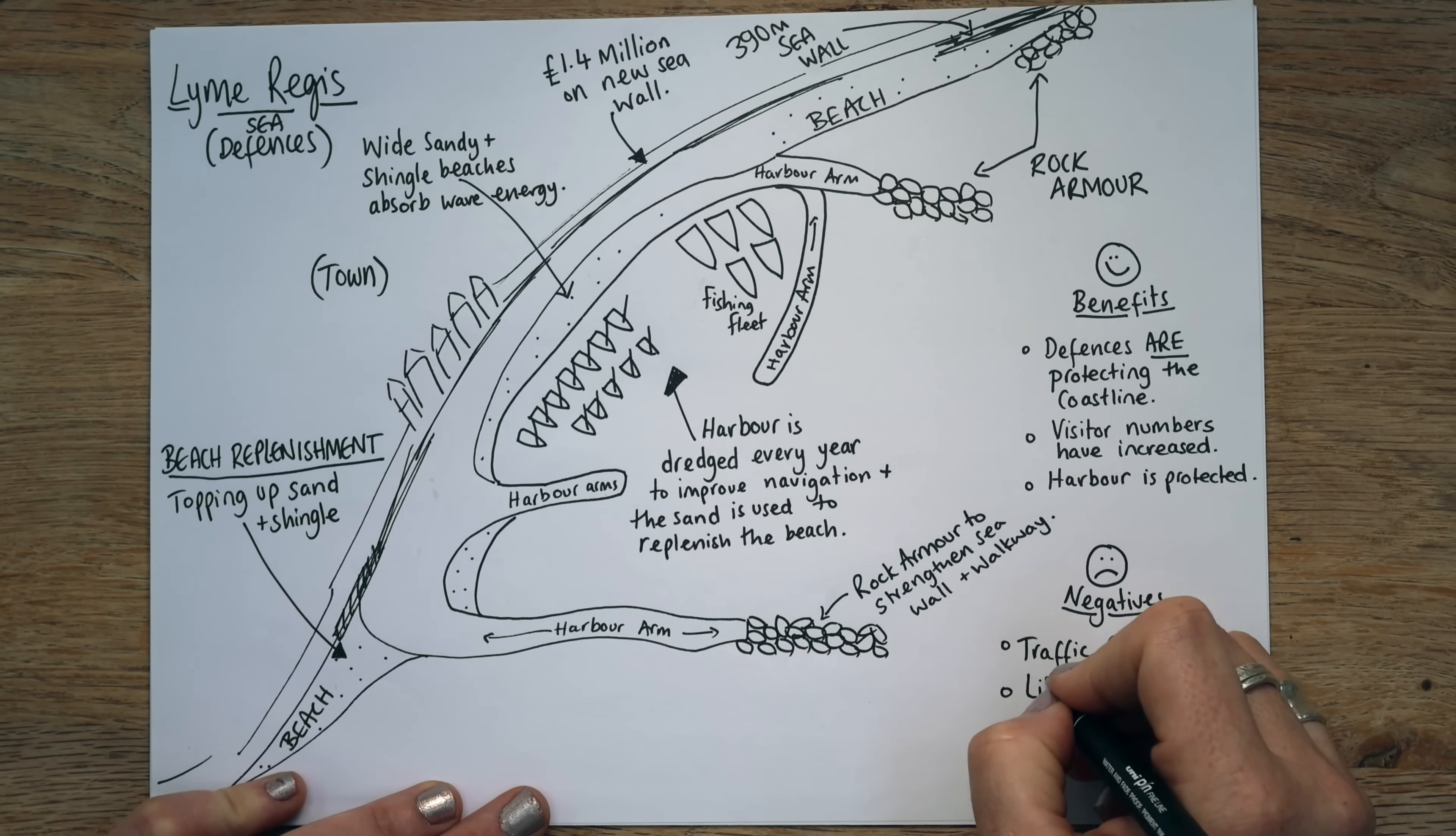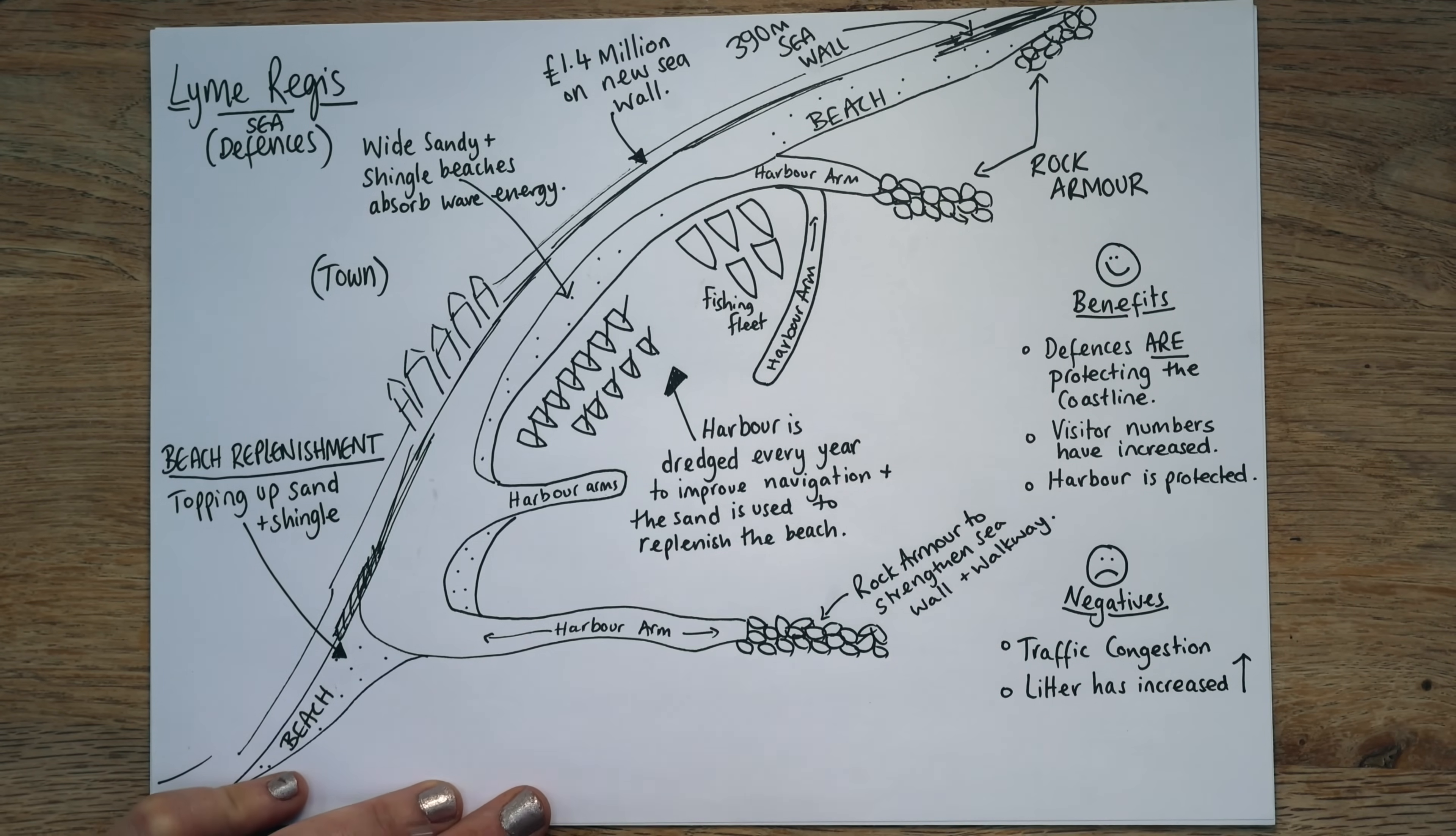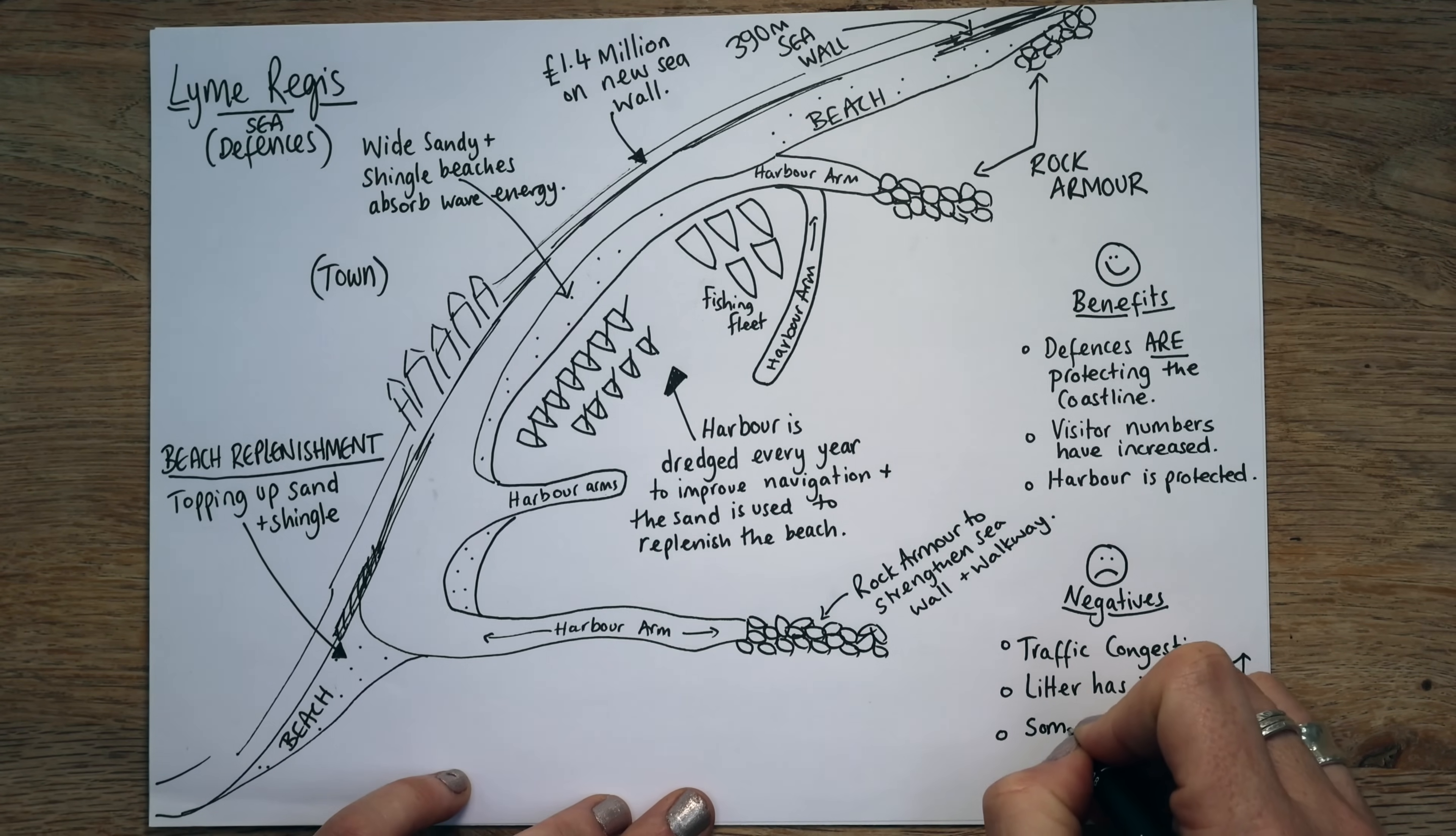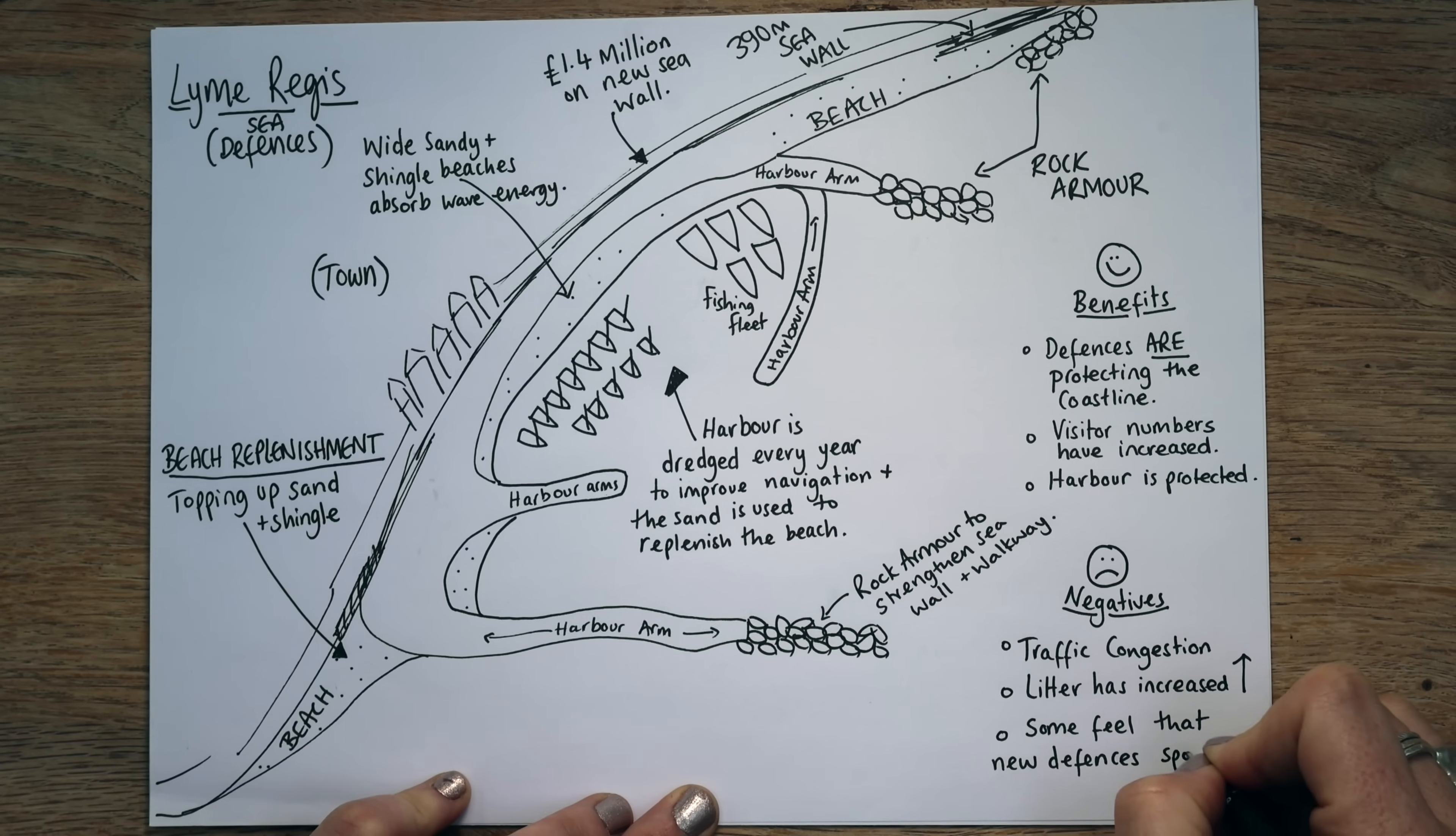Not only that, but litter has increased. So sadly, with more visitors, you get more litter. People leaving things like fish and chip packets or crisps and chocolate and things like that. Drinks, cans around. And lastly, some people, not everyone, but some people feel that these new defences have kind of spoiled the natural landscape. So we'll put some feel that new defences spoil the natural landscape. Because there's a lot, all those rock armour, all that concrete, the sea wall, it's not natural.